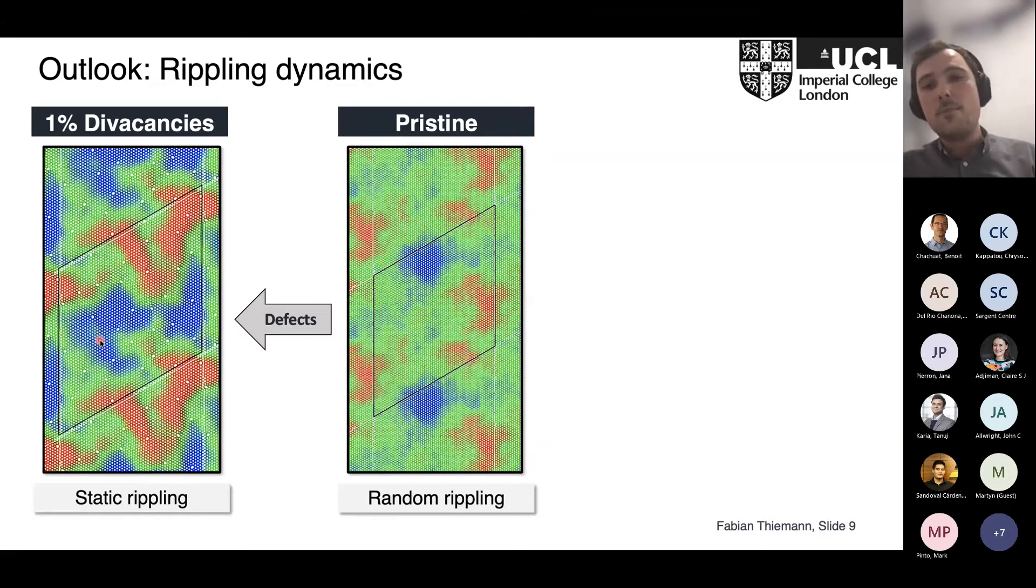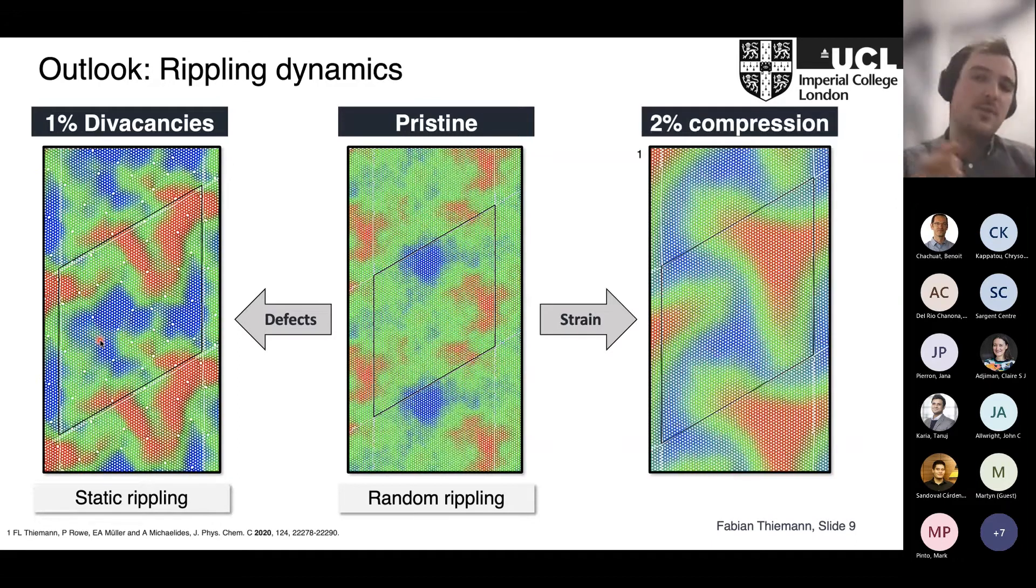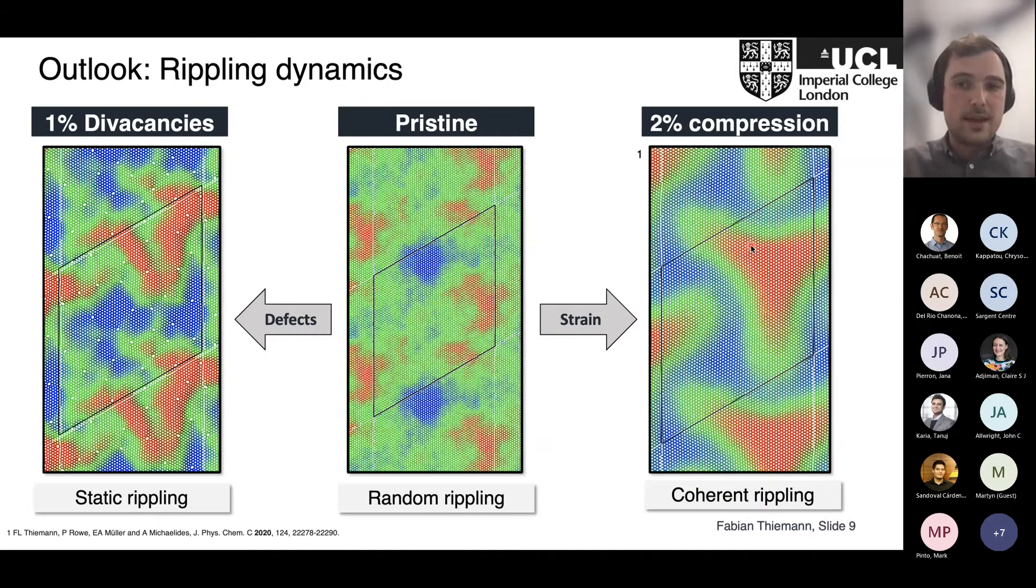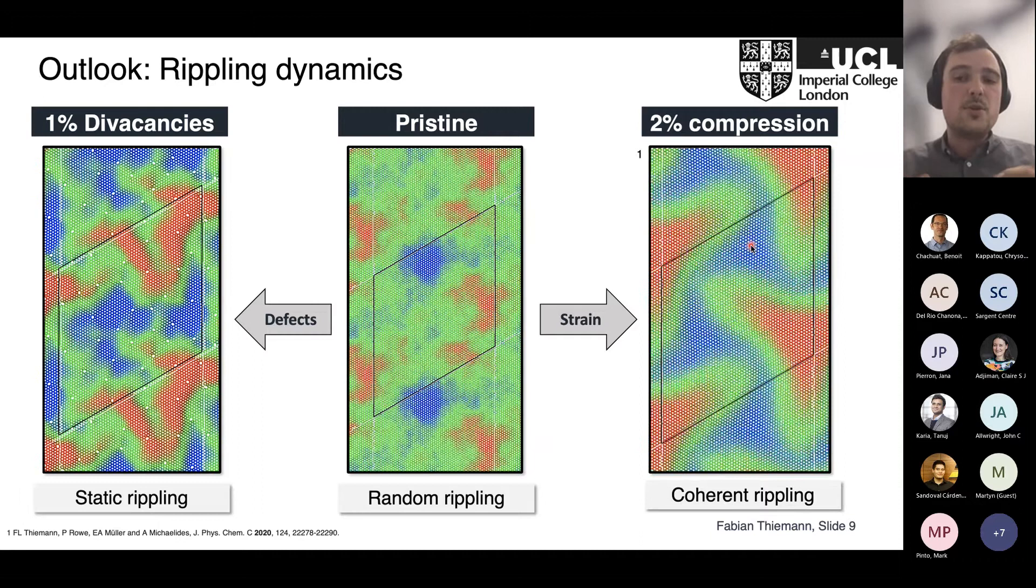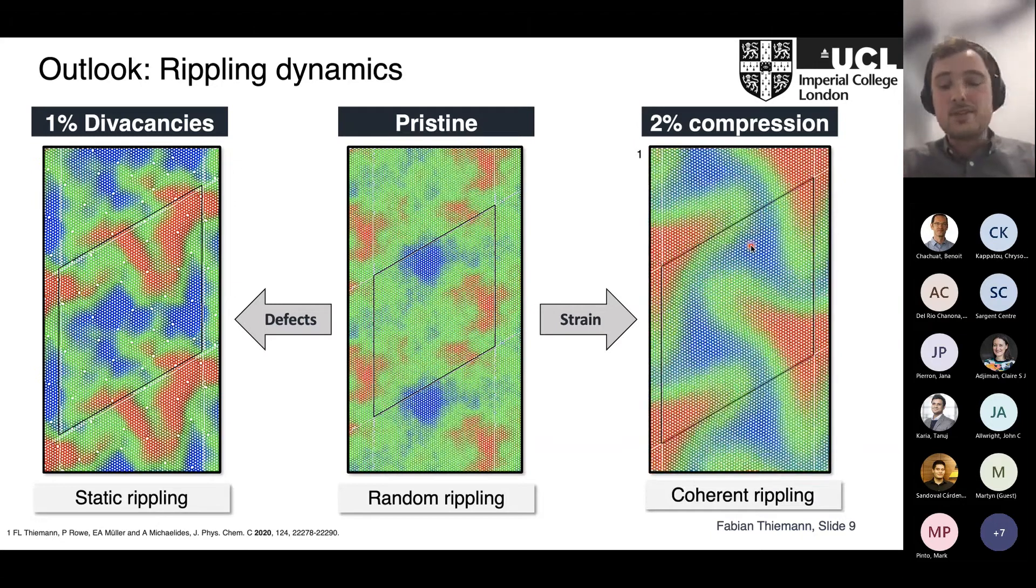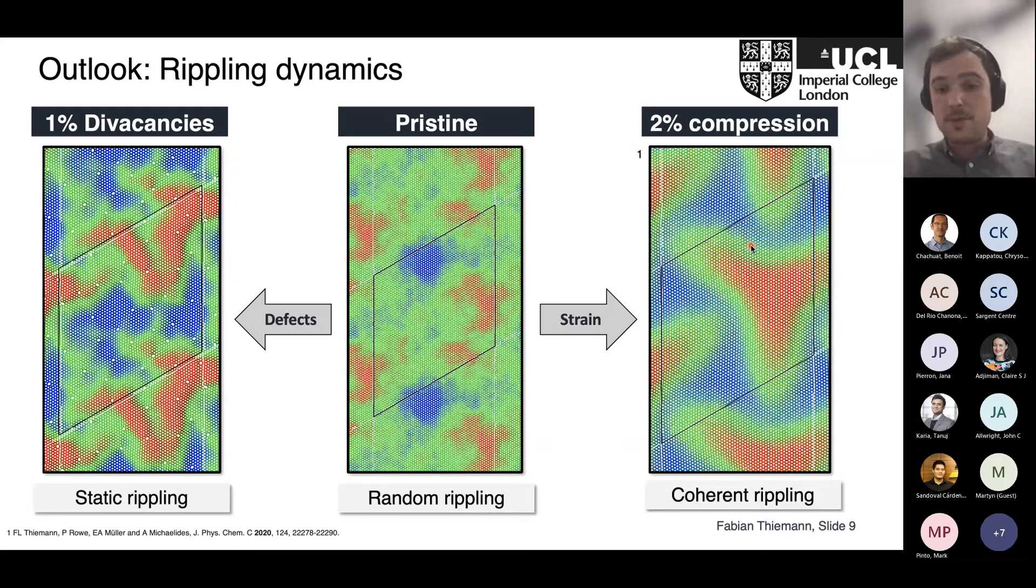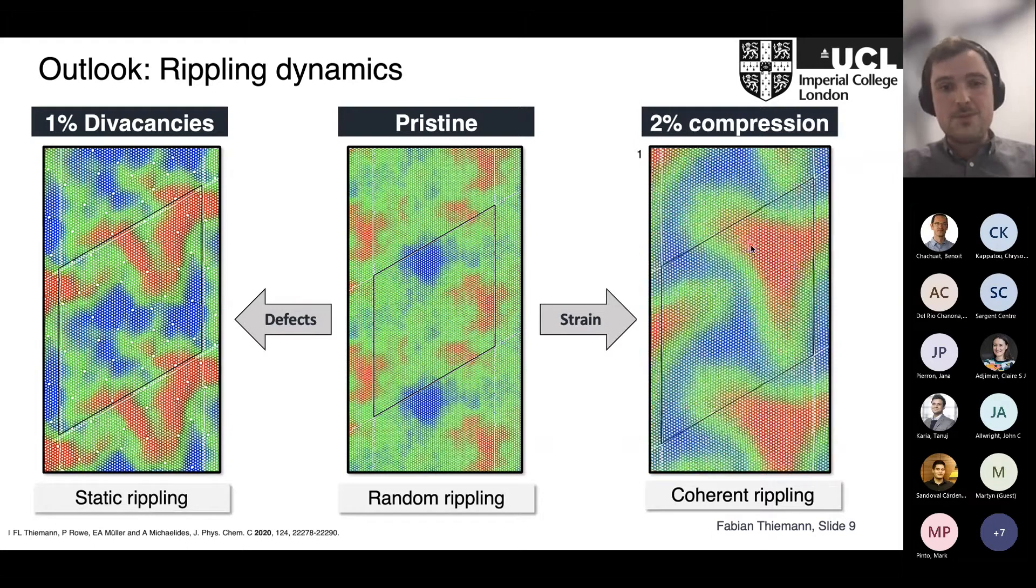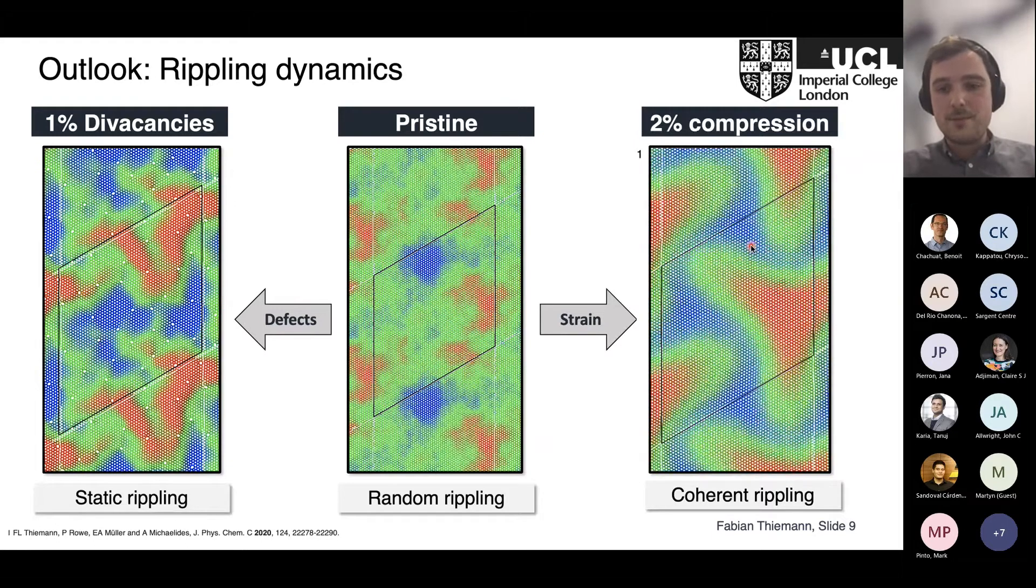We can also compare that with our previous work where we looked at what happens if you compress graphene. Then you get these very nicely shaped ripples—it's also high corrugation, but if you do that on a global level, just applying uniaxial strain, you observe that the ripples still move. They don't move randomly; they move coherently. This is all quite interesting and could be interesting for some applications. I can talk about that more later.